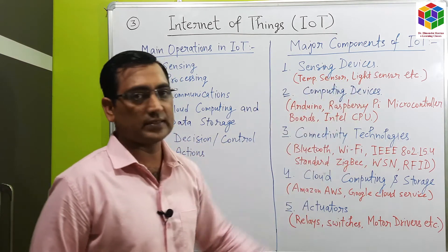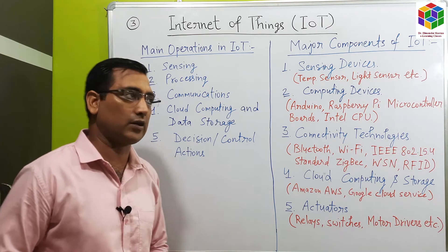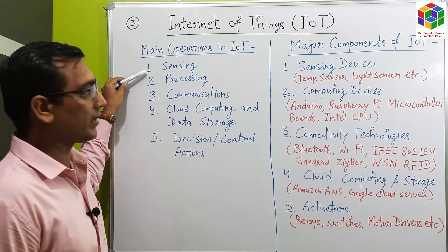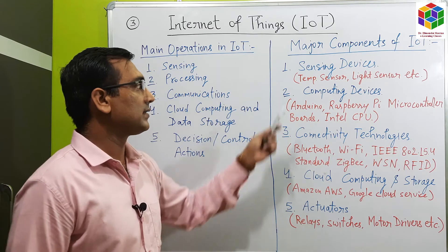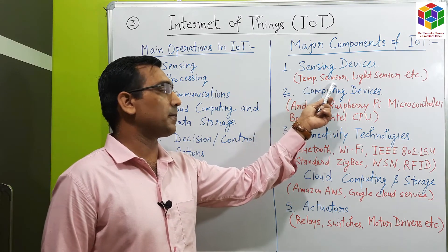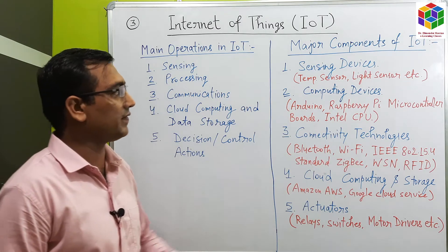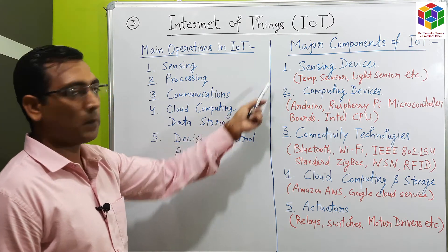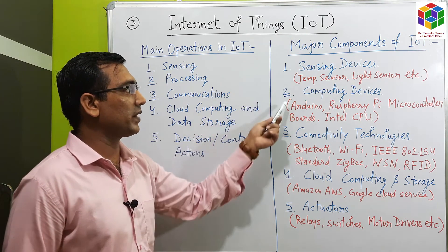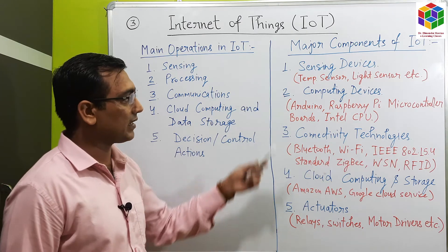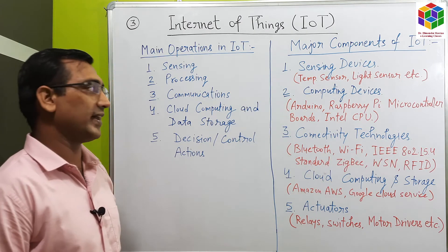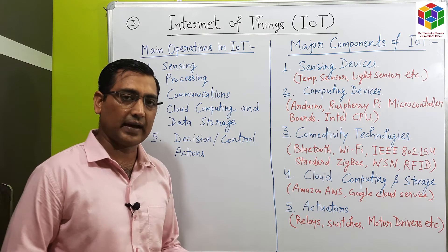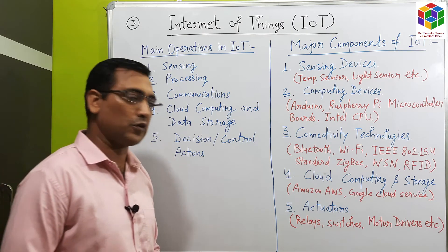Now we will see the major components of IoT — the physical components. Number one, sensing devices. As this is the first step in the main operations of IoT, sensing devices are required. There are various types of sensing devices like temperature sensor, humidity sensor, DHT11, light sensor, pressure sensor, and acceleration sensors. These are connected with the microcontroller boards. The second major component of IoT is the computing device. There are various computing devices like Arduino board, Raspberry Pi, microcontroller boards, and Intel CPUs like i3, i5, i7, and i9 series which are used in laptops and computer systems.